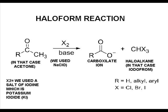The reaction we performed is called the haloform reaction and it was used for the first time in 1822 by Serullas. The simplified reaction is the following one: a compound like acetone reacts with a halogen — in this case iodine — in a basic solution like bleach. The product is iodoform plus a carboxylate ion.